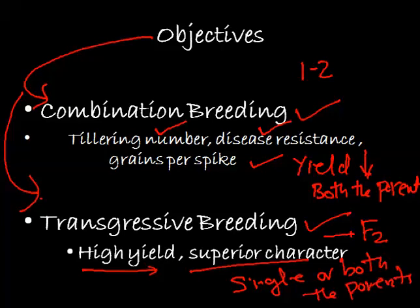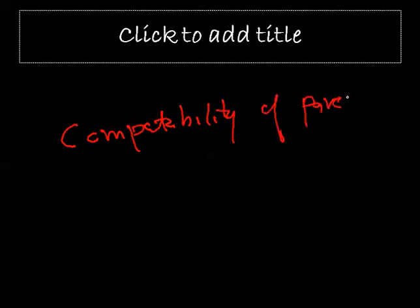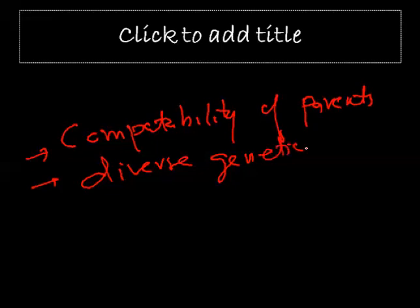To achieve transgressive breeding, we have to keep certain things in mind: first, the compatibility of the parents, and second, the diverse genetic makeup. These two important factors must be considered, as they help combine two different types of genetic setups into one particular hybrid.